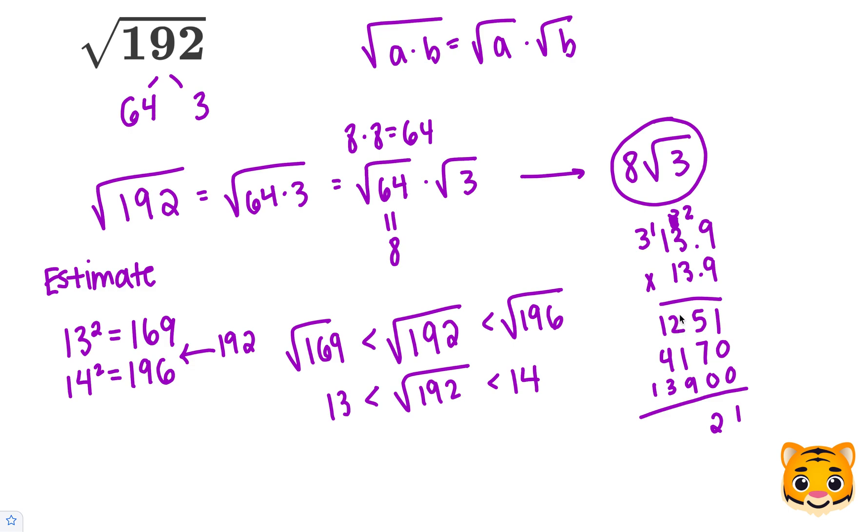Now let's add these together. When we add them together, we get 193.21, which is very close to 192. Let's try 13.8 and see if that gives us a closer value, as 13.9 was just a little bit too large.